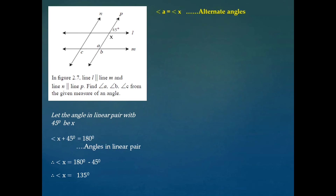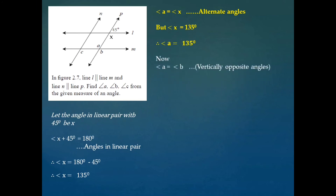Now angle A is congruent with angle X, as these two are alternate angles, because line N and line P are parallel. That is why these two alternate angles are congruent. Since angle X is 135 degrees, angle A is also 135 degrees.